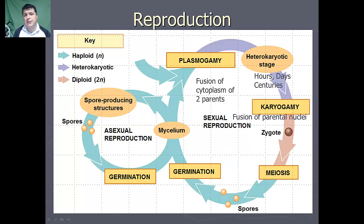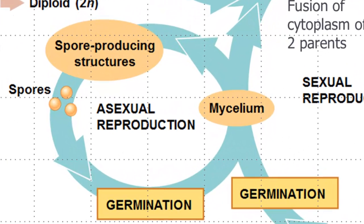Let's take a look at a general overview of the reproductive cycles, both sexual and asexual in fungi. Both cycles will start with our mycelium, which are reproductive structures. The mycelium in asexual reproduction will produce spore-producing structures. These spores then will mature and germinate and produce new mycelium — and so that would be asexual reproduction.